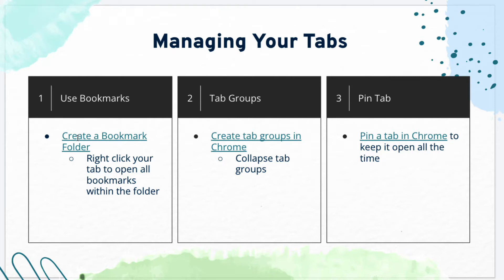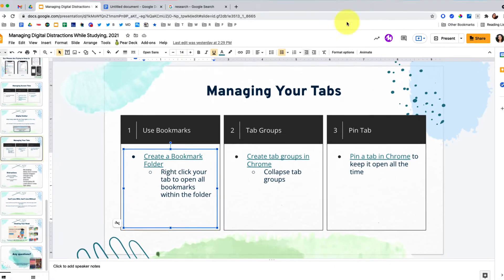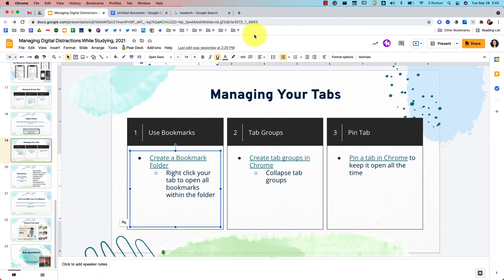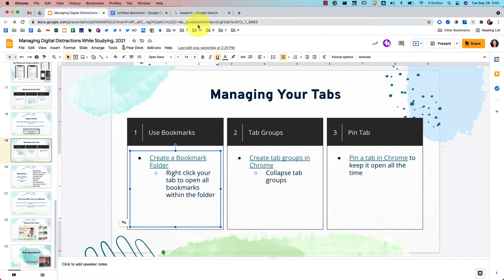The first tip is creating a bookmark folder. If you don't already have your bookmark bar on, I highly recommend that you turn that on so you have easy access to your bookmarks. You go to View and choose 'Always show bookmarks bar,' and then you'll have this bar where you can add anything that you like.